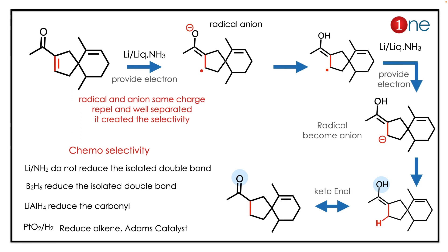The answer is straightforward: lithium in liquid ammonia. This reagent selectively reduces only the conjugated double bond. The mechanism begins with a radical cation, then an alcohol forms, then the radical converts to an anion.